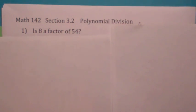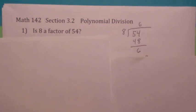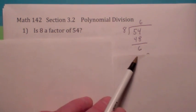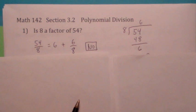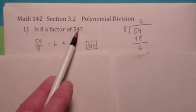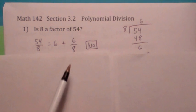Let's talk about long division first. Is 8 a factor of 54? It's going to be a factor if when you use long division it goes in evenly. Well, it doesn't. When you divide 8 into 54, you get 6 with a remainder of 6, so the answer is no. You could say that when you divide 54 by 8 you get 6 plus 6 over 8.